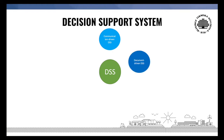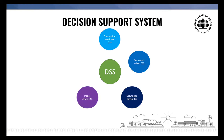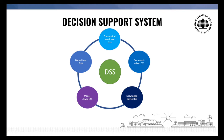Document-driven DSS integrates a variety of storage and processing technologies for document retrieval and analysis. Knowledge-driven DSS is a computer-based reasoning system that provides information, comprehension, and suggestions to users in the decision making process. Model-driven DSS uses complex simulation and optimization models to provide decision support. Data-driven DSS emphasizes data access and manipulation, whereby users can extract useful information that was stored previously using trained datasets.